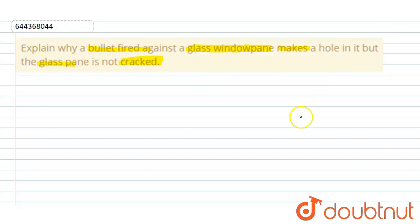So let's suppose here is a glass pane and we know that the glass pane is solid. And here the bullet is fired.